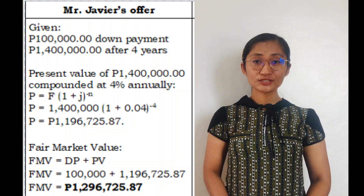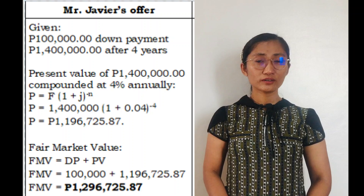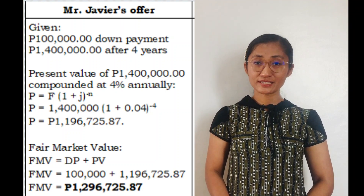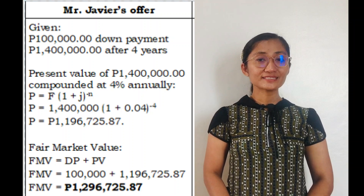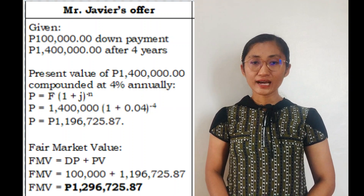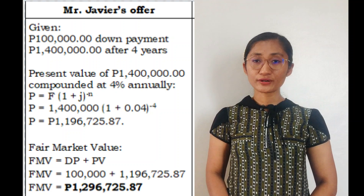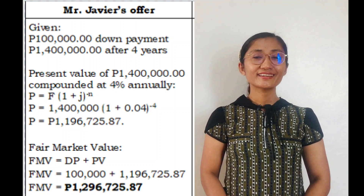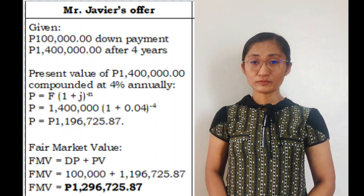By manipulating the operations involved, you'll get the value of P. To derive it using a scientific calculator, press 1,400,000, then the multiplication key, then open parenthesis, press 1 plus 0.04, close parenthesis, then the exponent key (X to the Y), press the negative sign for the negative exponent, then press 4, and finally press equals.